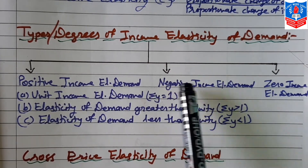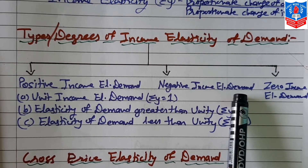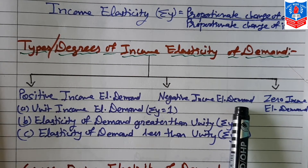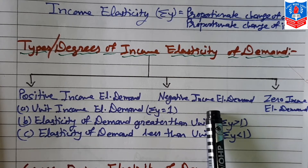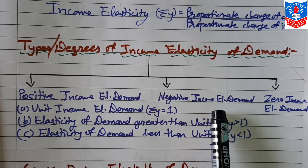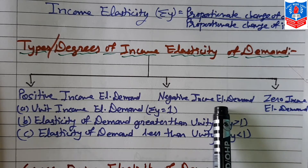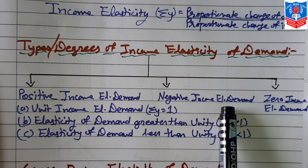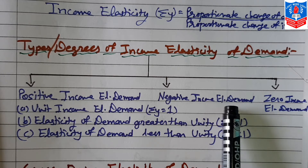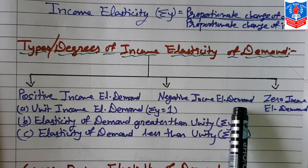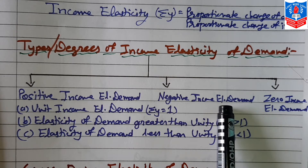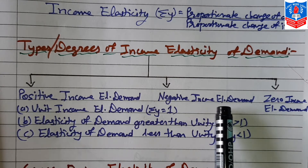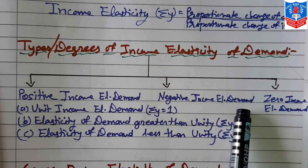Next is negative income elasticity. This occurs when a rise in consumer income leads to a decrease in demand, or a fall in income leads to an increase in demand. Such elasticity is known as negative income elasticity of demand. Normally, some types of inferior goods have negative income elasticity of demand. As we discussed earlier with Robert Giffen's concept, these goods are known as Giffen goods, and they exhibit negative income elasticity.